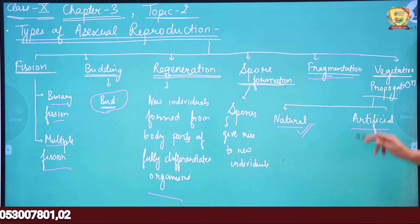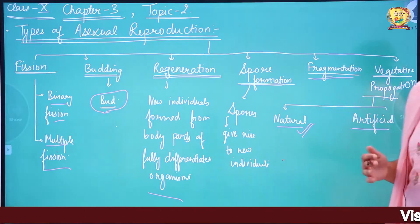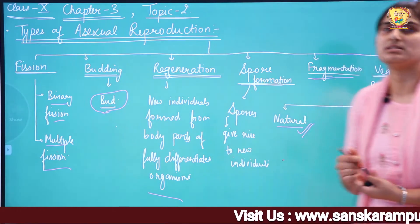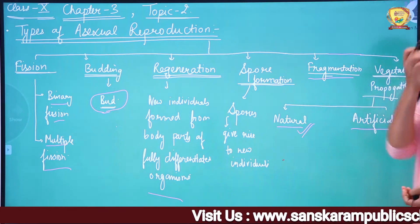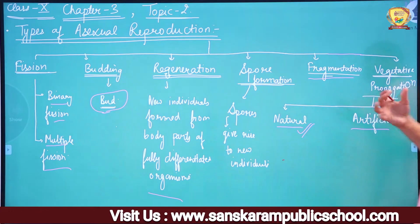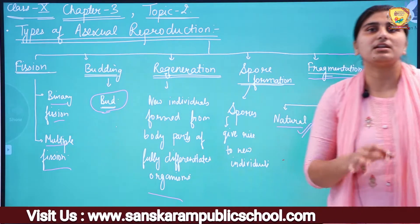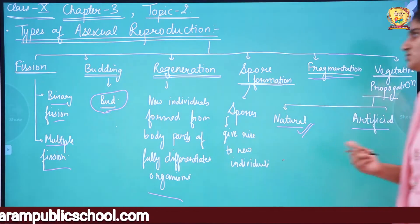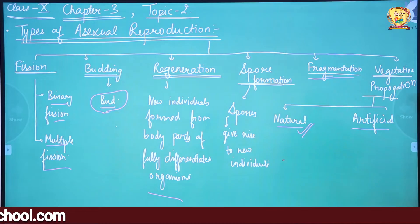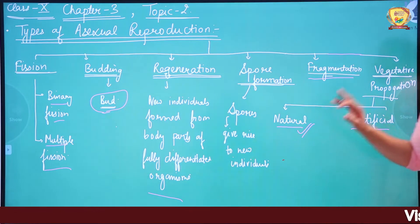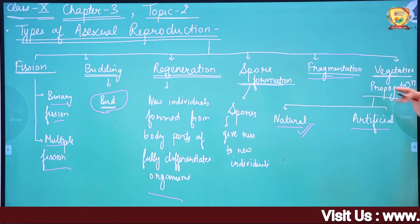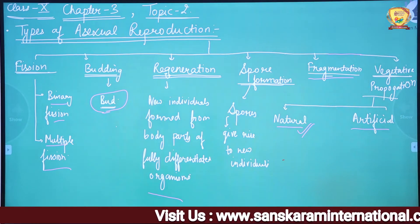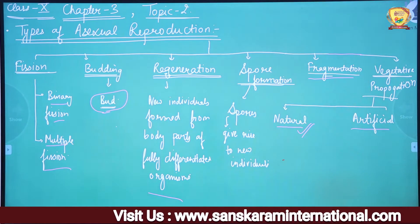In artificial vegetative propagation, a part of the plant is taken and grown in the lab under controlled conditions so that a new individual is formed. So we have given a general introduction of all six types of asexual reproduction, and now we will discuss each one in detail.